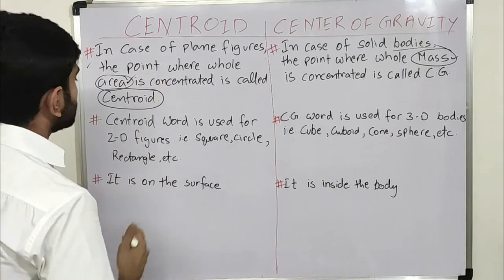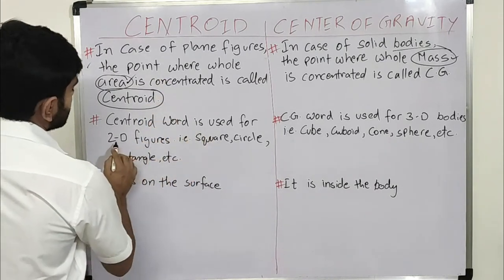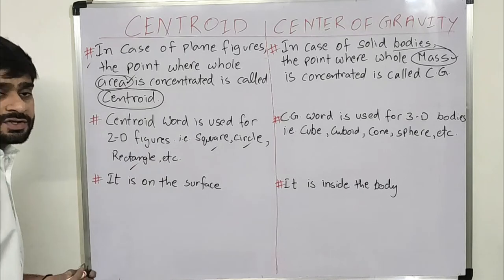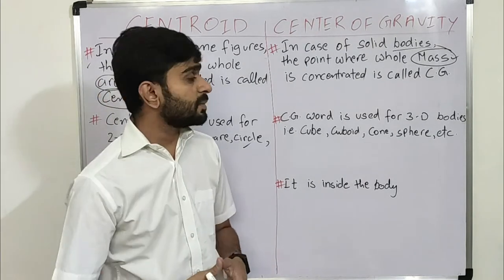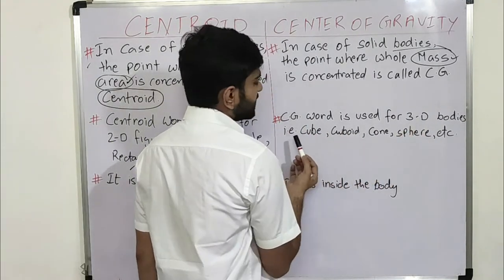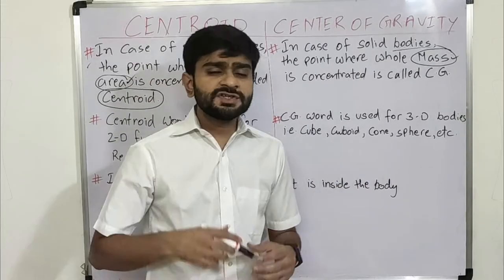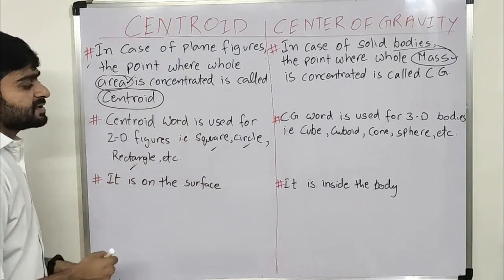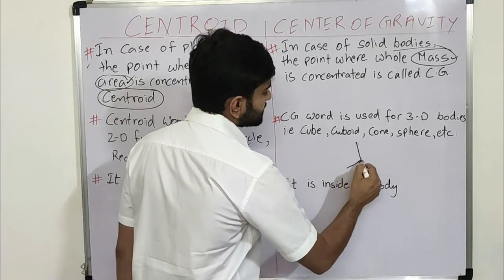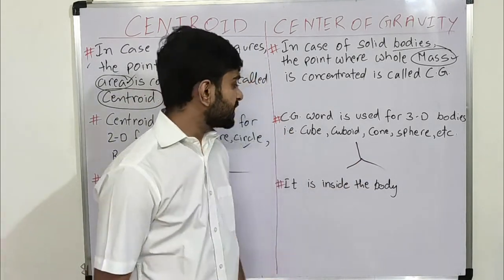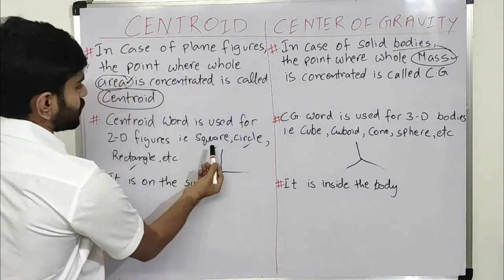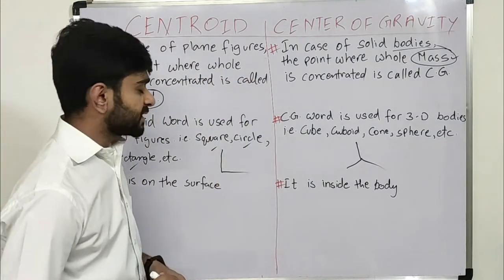The term centroid is used for 2D figures such as a square, circle, rectangle, etc. The term center of gravity is used for three-dimensional bodies such as a cube, cuboid, cone, sphere, etc. Centroid involves only two axes, x and y, while center of gravity involves all three axes: x, y, and z. A cube, cuboid, cone, or sphere has all three axes, whereas a square, circle, or rectangle has only two axes, x and y.